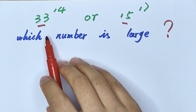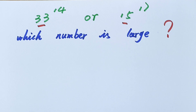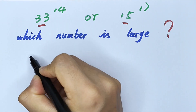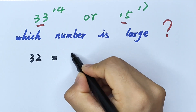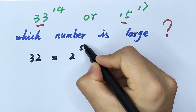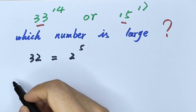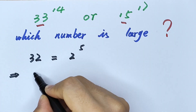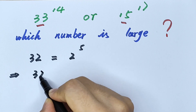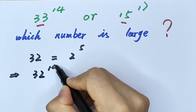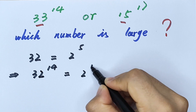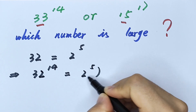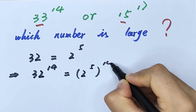Converting 32 to a number with base 2 — 32 is the same as 2 to the power of 5. So we can write 32 to the power of 14 as 2 to the power of 5, in brackets, to the power of 14.